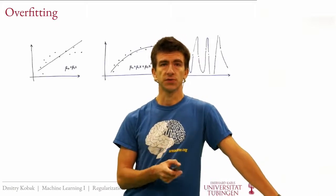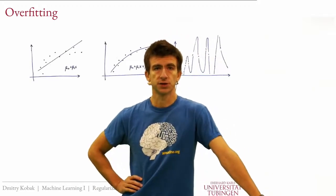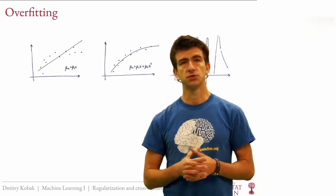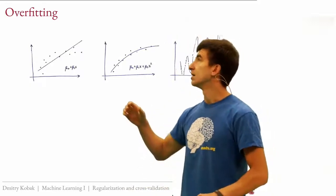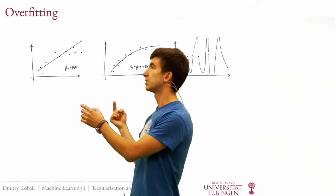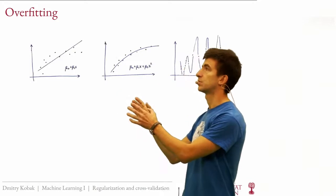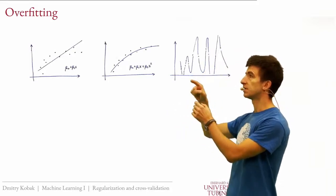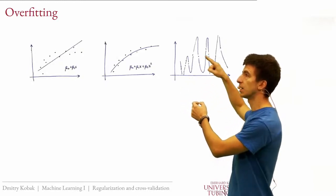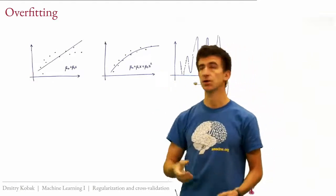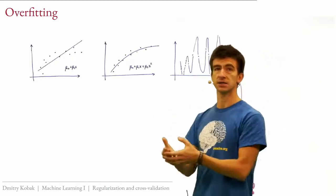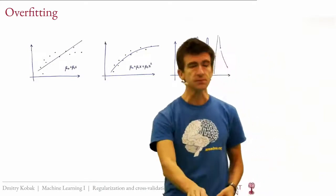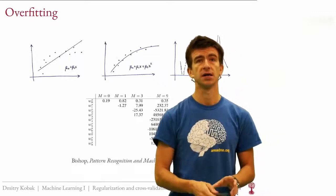Last time we introduced the concept of overfitting. To illustrate it, I used the example of polynomial regression. We were fitting polynomials of different degrees to a small dataset of maybe 10 points. As we increase the degree, a straight line doesn't fit well, a quadratic fits really well, but a ninth-degree polynomial passes through every single point. The training loss is zero, but this is a really bad fit — if you're predicting something between points, you're way off. This is overfitting, and it happens when your model is too flexible for the data.